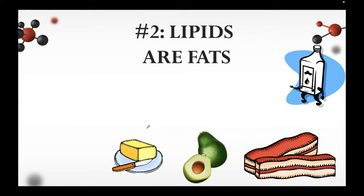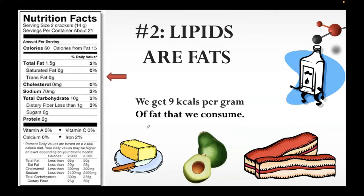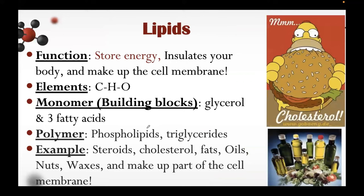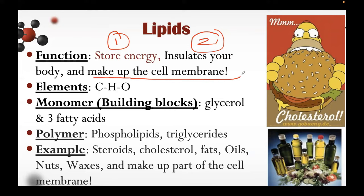Biomolecule number two are your lipids or fats. Lipids often have a bad connotation, but they have important primary functions in the body. The primary function of lipids is energy storage. Second, lipids insulate the body — people with more body fat tend to feel less cold because fat insulates the body. Lastly, and most importantly, lipids make up the cell membrane of our cells. Since our body is made up of billions of cells, lipids are essential.